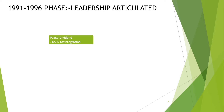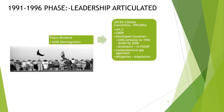In 1991, the USSR disintegrated, which was positive news as all countries could now invest in climate change rather than in armed states. In 1992, the Rio Convention took place. Article 2 of this convention stated that human interference should be prevented within a specific time frame so that it does not threaten food systems and enables sustainable development. Common But Differentiated Responsibilities was also discussed, stating that all countries have common responsibilities but they are differentiated based on their contribution to greenhouse gas emissions.